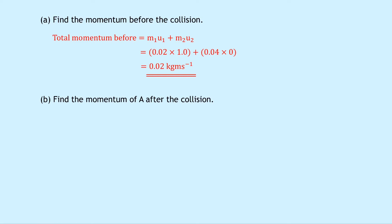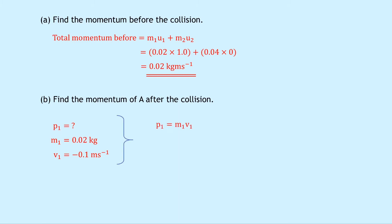Part B says to find the momentum of A after the collision. We use P1 equals M1 times V1. The mass M1 is 0.02 kilograms, and V1 is minus 0.1 meters per second — negative because vehicle A is now moving to the left, and we're taking leftward motion as negative, rightward as positive. So P1 equals 0.02 times minus 0.1, giving a momentum of minus 0.002 kilogram meters per second.